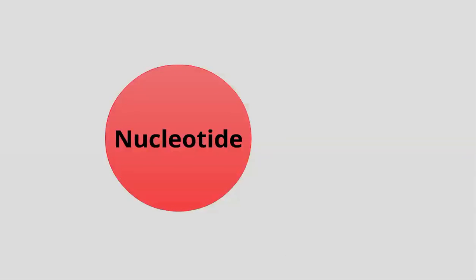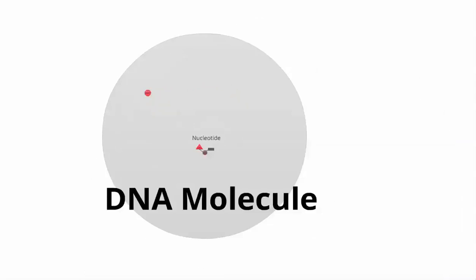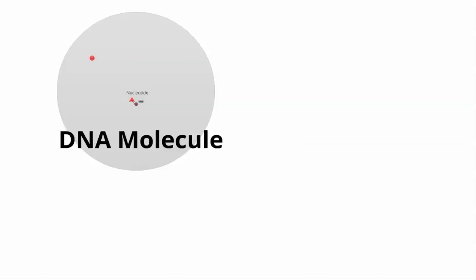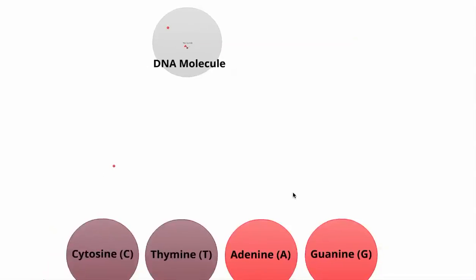A nucleotide is a very small part of the DNA molecule. The DNA molecule has billions and billions of nucleotides in each DNA molecule. The next thing it asks you to do on your worksheet is write the four different DNA bases. So you're going to draw four circles and write the four types of DNA bases in each circle. Color the single-ring bases one color and the double-ring bases another color.